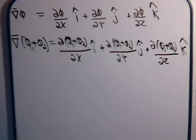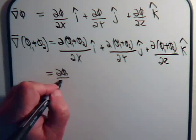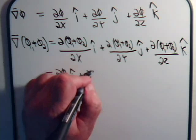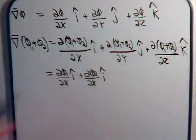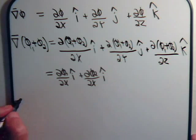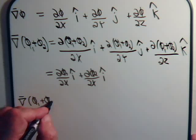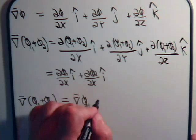It's not too difficult to see — in fact it's probably pretty obvious — that this first term we can write as the partial of p1 with respect to x times i, plus the partial of p2 with respect to x times the i unit vector. We get the same thing from the other terms. So taking the gradient of two scalars added together is just equal to the gradient of each of the individual scalars.